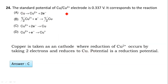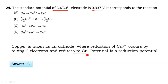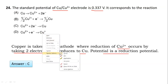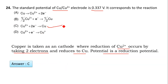Next question 24: The standard potential of the Cu/Cu²⁺ electrode is 0.337 volt. This corresponds to the reaction where copper is taken as a cathode, where reduction of Cu²⁺ occurs by accepting two electrons: Cu²⁺ + 2e⁻ → Cu. The potential is a reduction potential. Option C is correct.